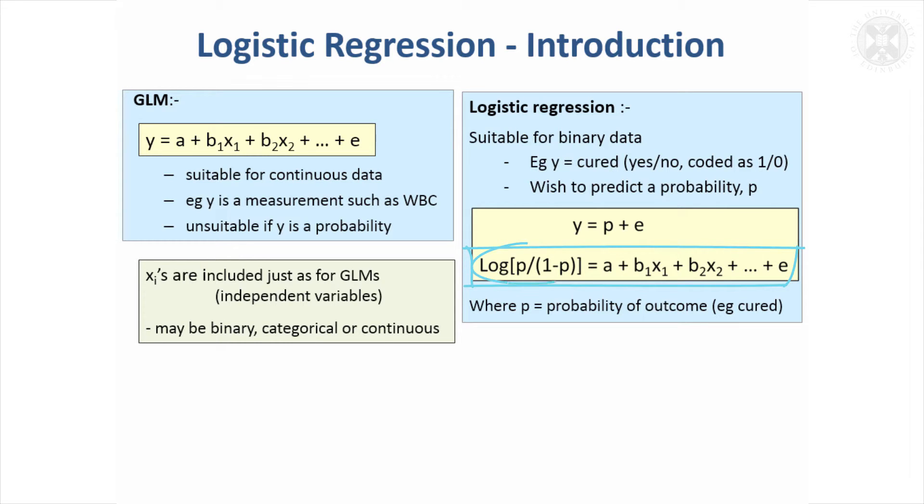So it's this log of the probability over 1 minus the probability which links the parameters in the model to the actual data, which is something that has a value of 0 to 1 because it may or may not happen.